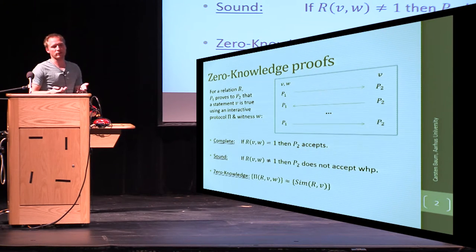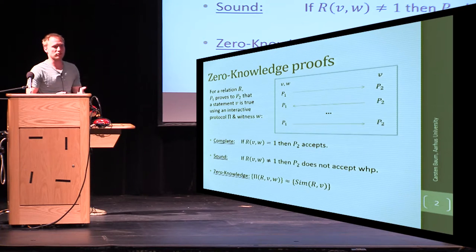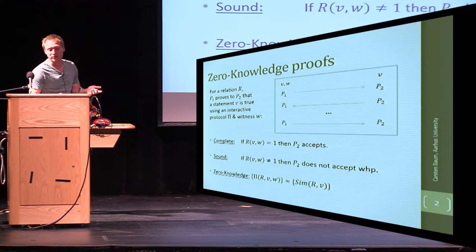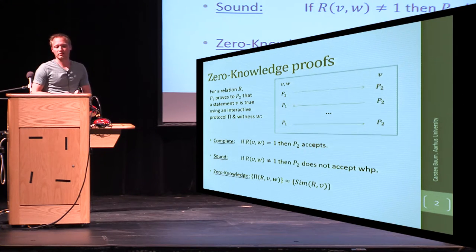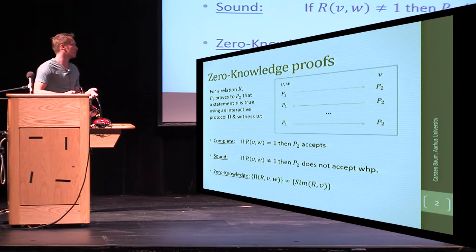Second, if the prover starts this protocol with something which is not a correct witness for the relation, then the verifier is not supposed to accept.